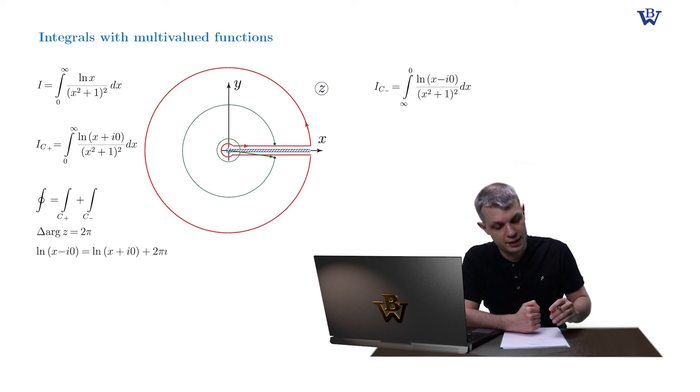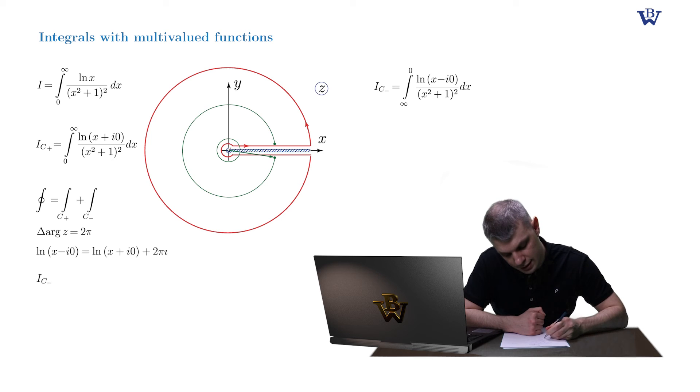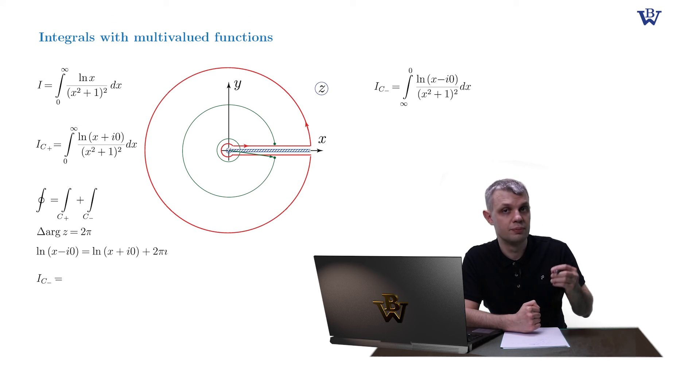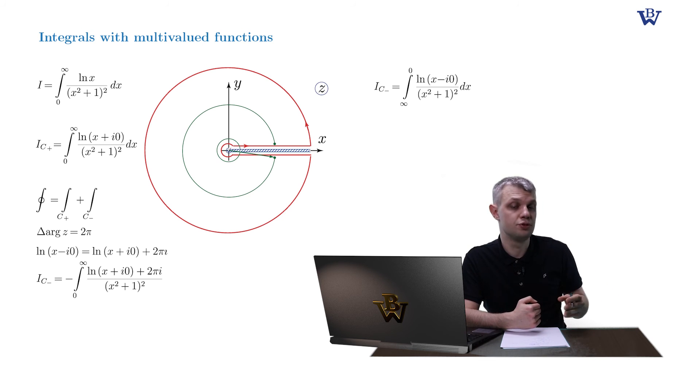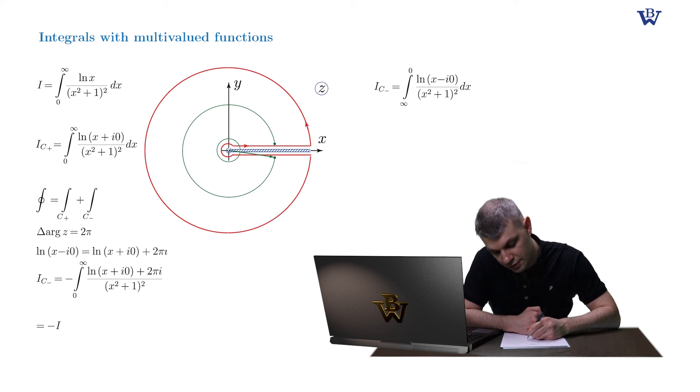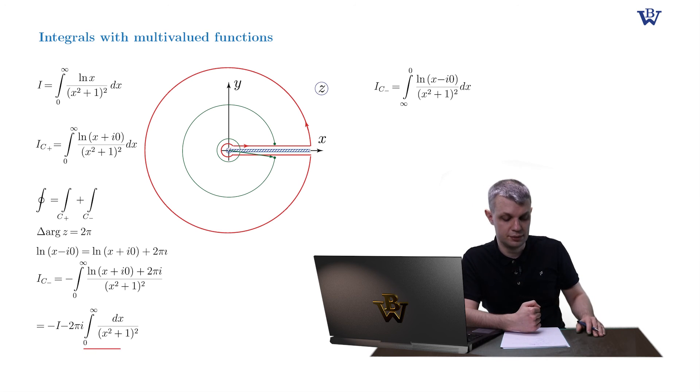This must be an almost trivial expression for you by now. So let's plug this into our c minus integral. So we have integral c minus is equal to... Let's interchange the limit of integration and put minus sign in front of our integral. So minus the integral from zero to plus infinity. Log of (x plus i zero) plus 2 pi i divided by our denominator. And then we split this integral into two parts. So the first part must be familiar to us. It's our original integral i. And the second term minus 2 pi i times the integral of dx divided by (x squared plus 1) squared in the so-called remainder term. It's of no interest to us right now. It's some elementary integral and we'll compute it later.